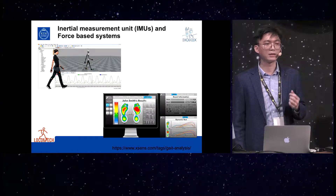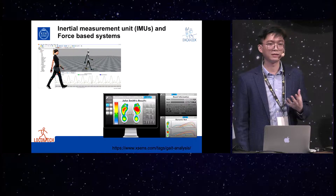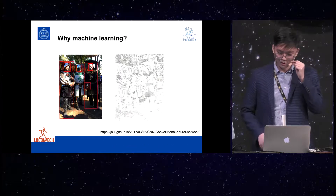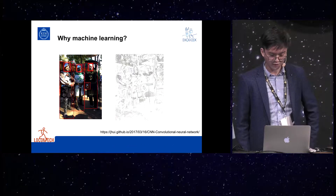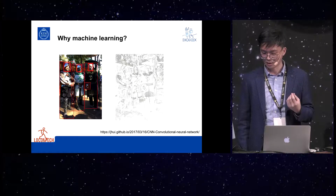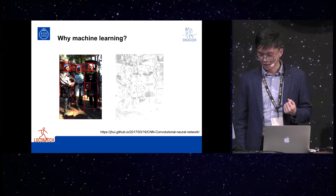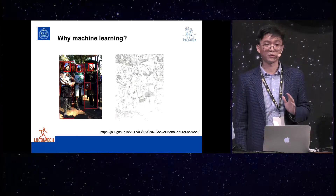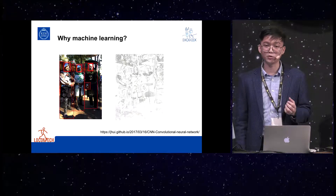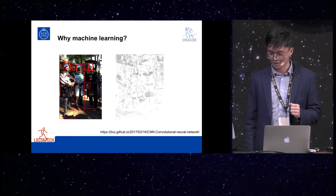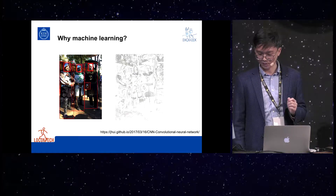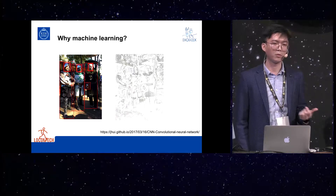The force-based systems, such as foot switches, are considered the golden standard for gait detection. So why machine learning in gait phase recognition? Most of the available computational methods for gait recognition nowadays are based on a threshold-based finite state machine. Machine learning is needed for tasks that are too complicated for humans to code directly. Instead of writing a program by hand for each specific task, we collect a lot of examples that specify the correct output for a given input, and a machine learning algorithm then takes these examples and produces a program that does the job.